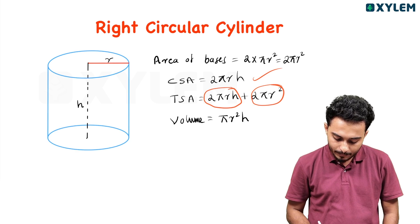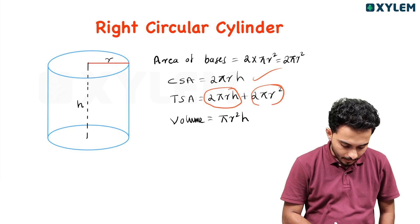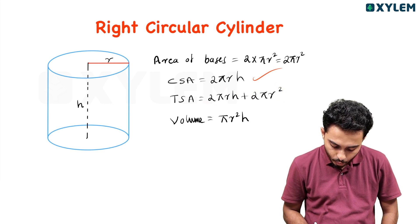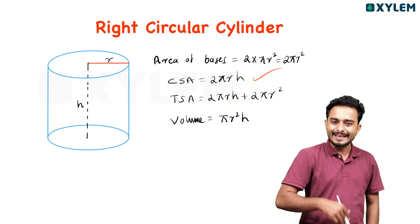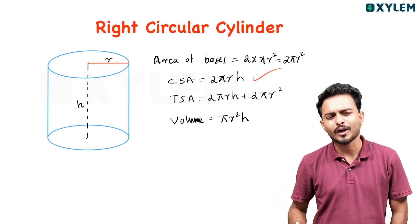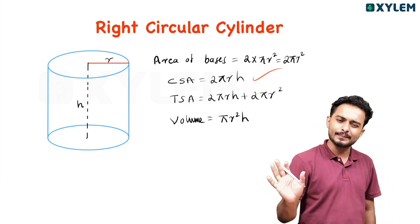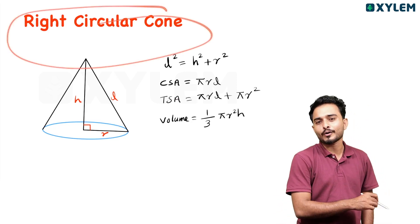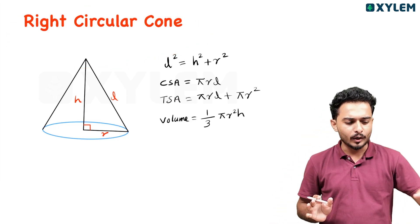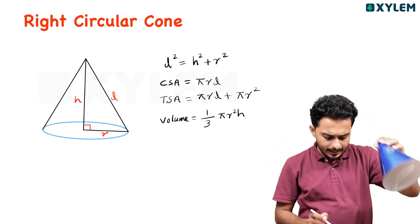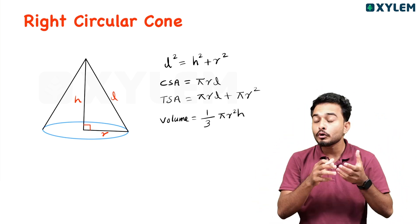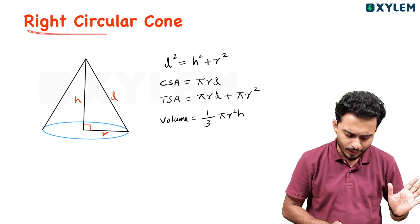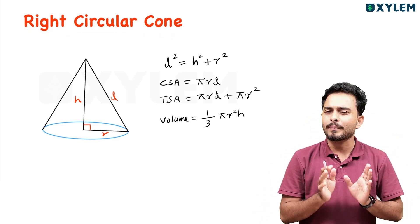For a school student, you can use 2πR squared. Total surface area = 2πR squared + 2πRH, which can be written as 2πR(H + R).